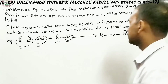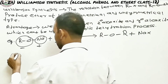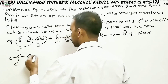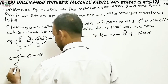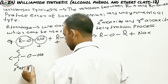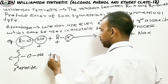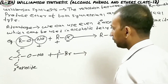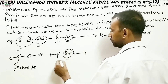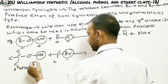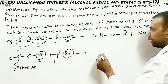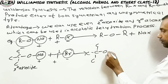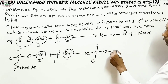Now suppose you take a tertiary alkoxide — as you can see, this is a tertiary alkoxide — and you react it with methyl bromide. By the reaction mechanism, bromine comes out as a negative charge, sodium comes out as positive, and the alkoxide as negative. So the product you get is a tertiary ether, and sodium bromide is the byproduct.